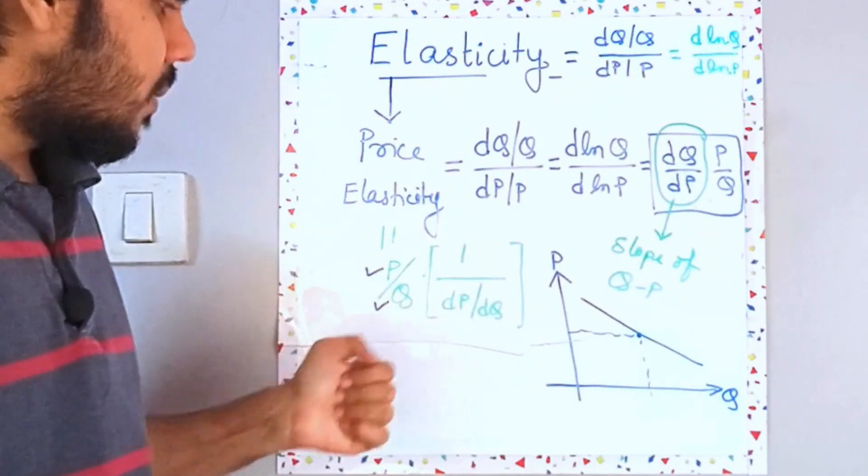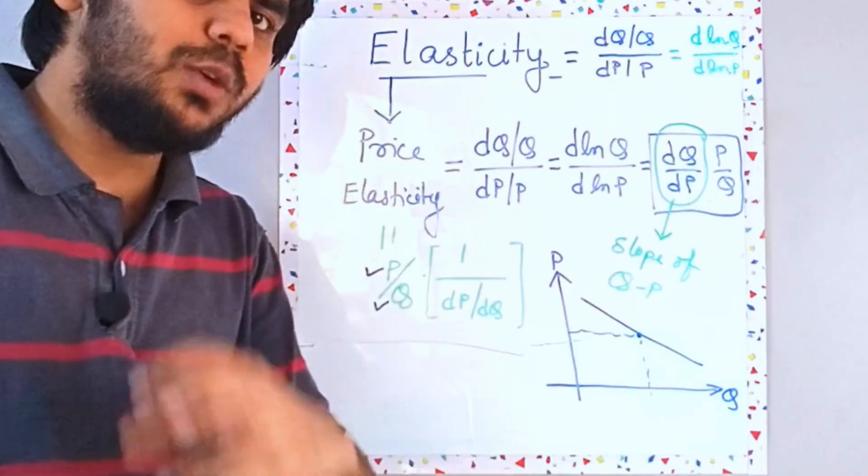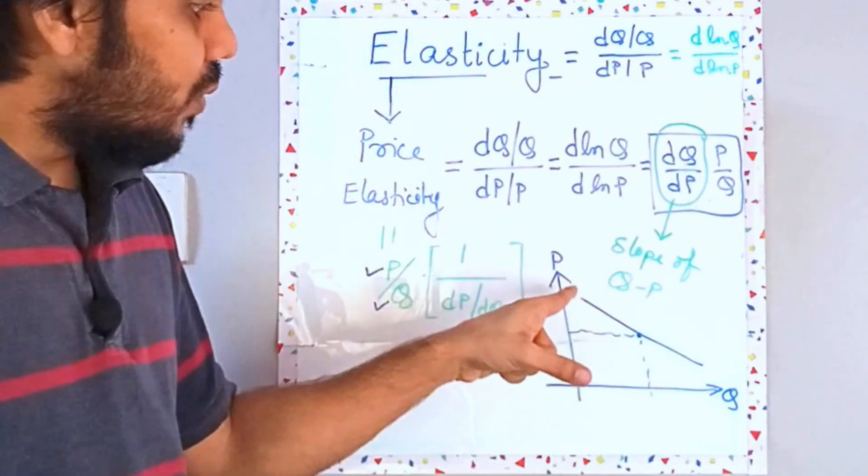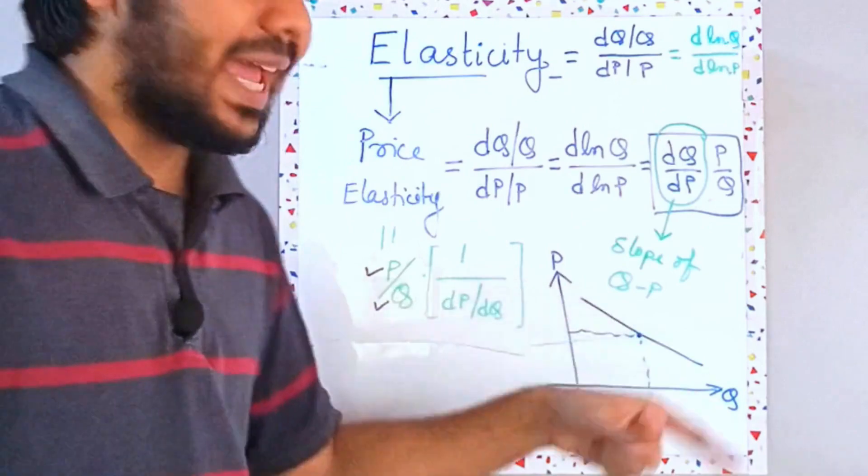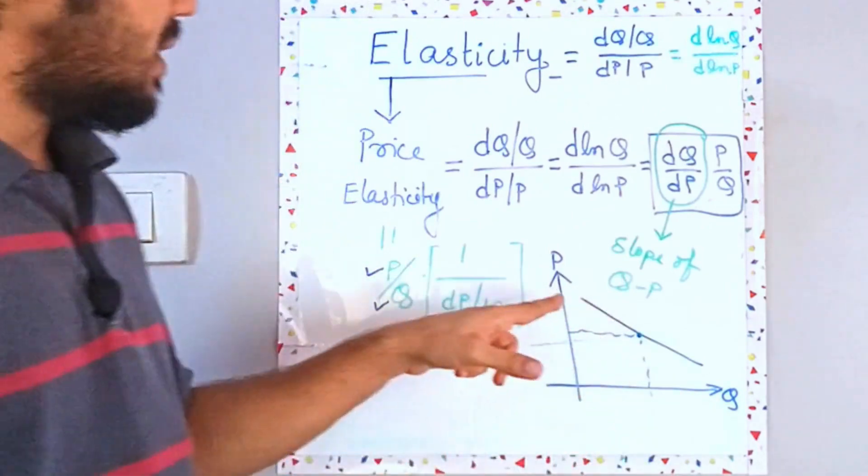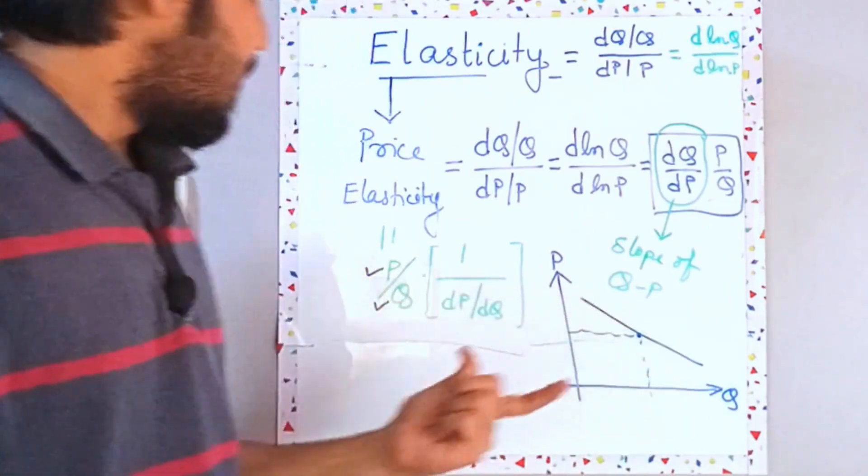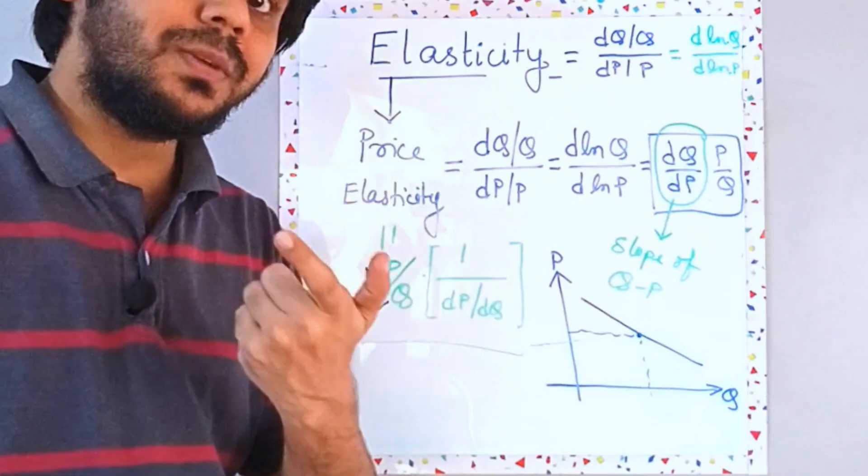But what about P by Q? P by Q is not generally going to be constant because over this line P by Q can change, right? So if P by Q is changing, this elasticity would not remain the same.